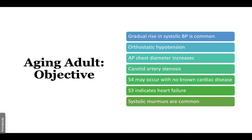Characteristics of the aging adult: blood pressure tends to rise, and they are more likely to have orthostatic hypotension. The AP chest diameter increases — the anterior-posterior diameter grows, making patients more barrel-chested, while normal chest diameter side-to-side should be double the AP diameter. Aging adults are more susceptible to carotid artery stenosis. An S4 may occur with no known cardiac disease — S3 indicates fluid overload or heart failure, while S4 indicates high pressure, as with hypertrophy. Systolic murmurs are also more common with aging.